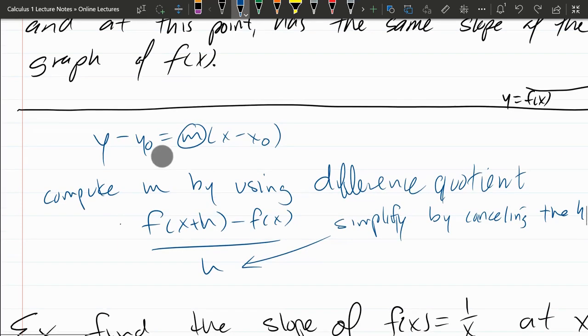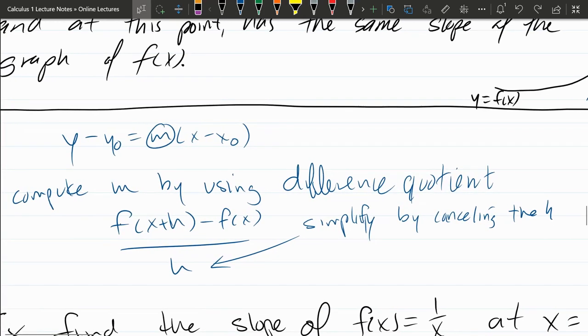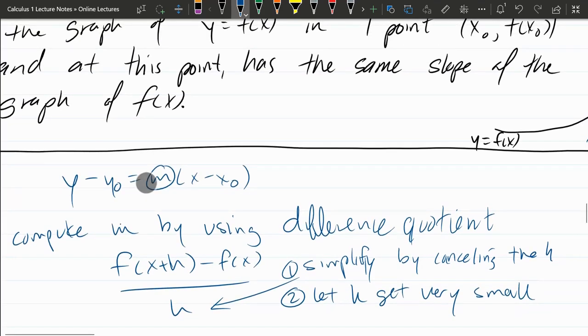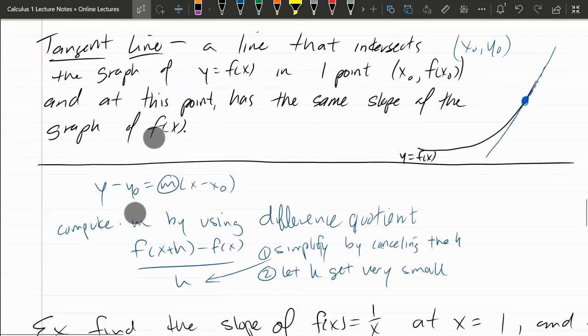And then, so that's the first thing you would do. The second thing you would do is let h get very small. And we'll do a few examples next. And you'll see this in context.